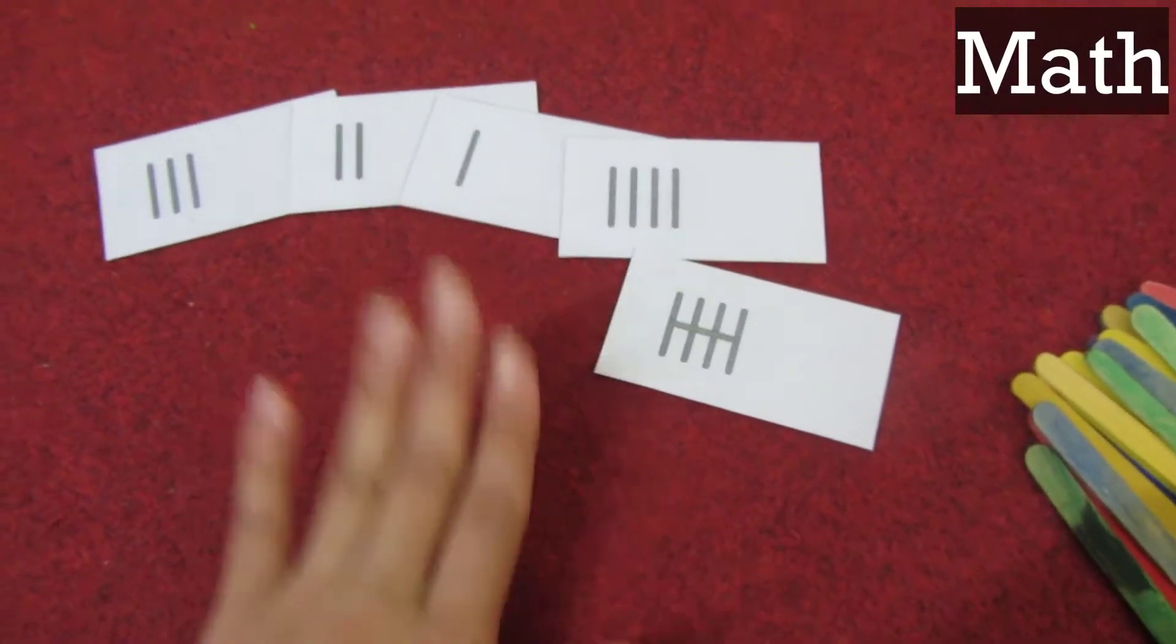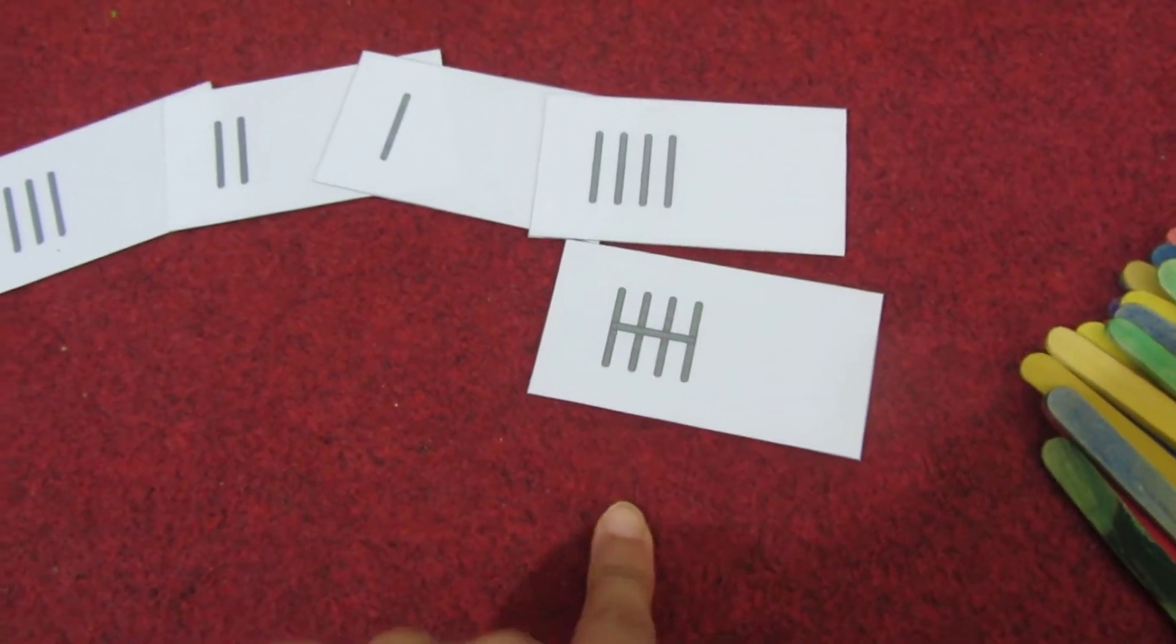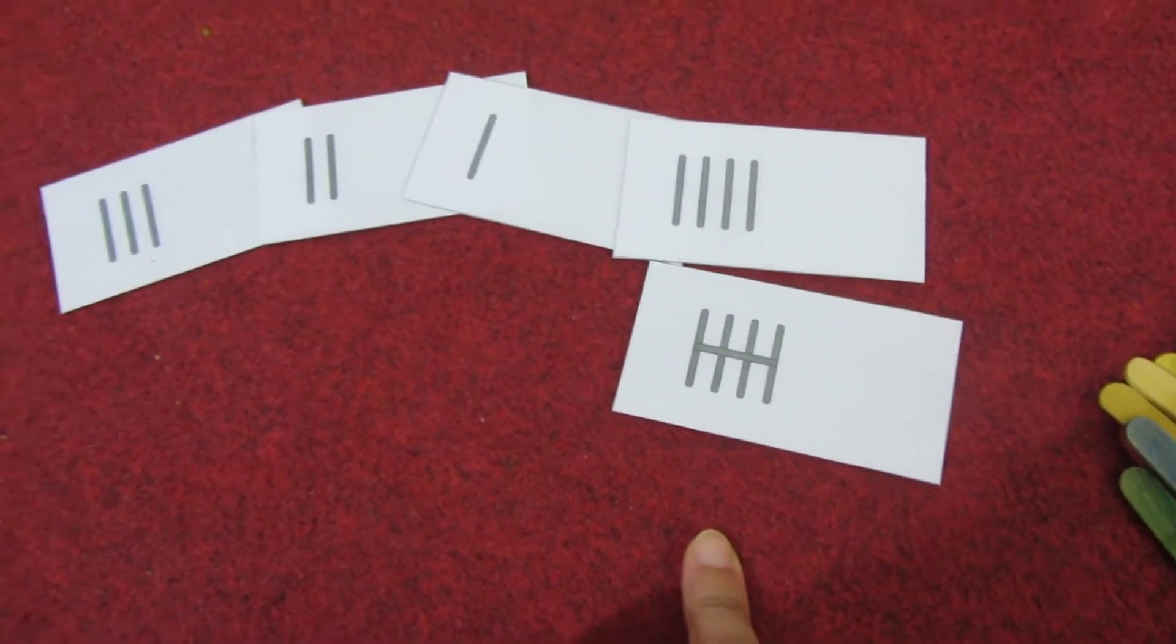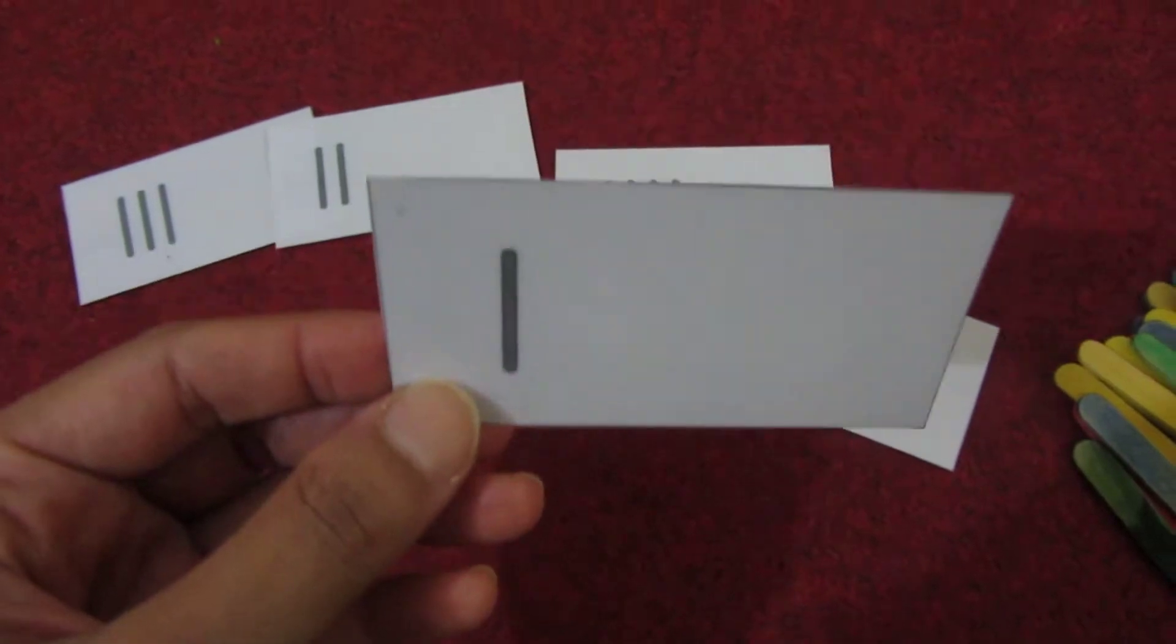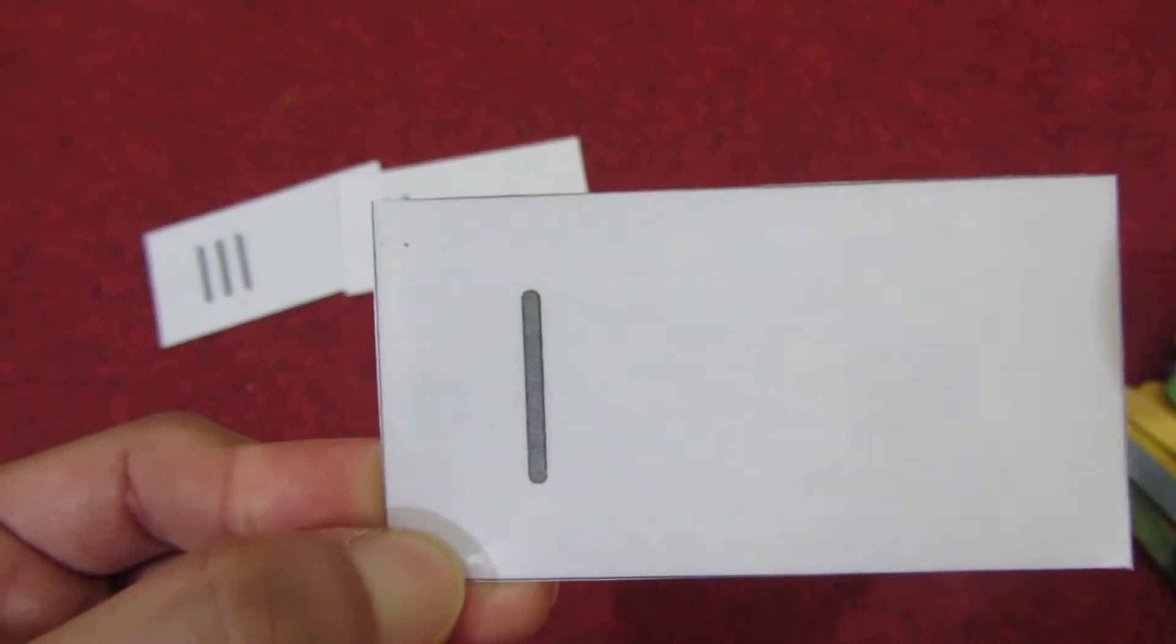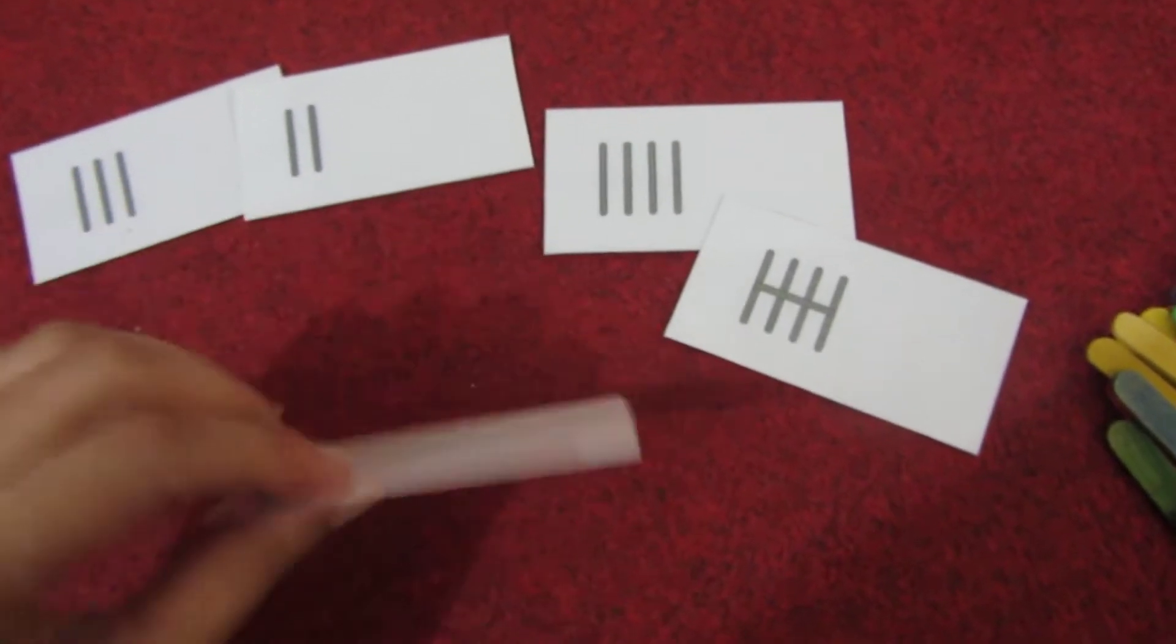So first of all, we have some tally sticks cards in math. These are the Right Start curriculum, but again, they are very easy to make. You guys can just make it at home. You can draw lines and then laminate it, and then you will have these cards ready—one, two, ten of these cards.